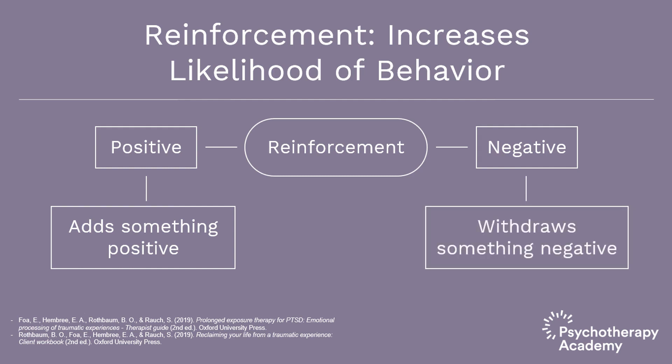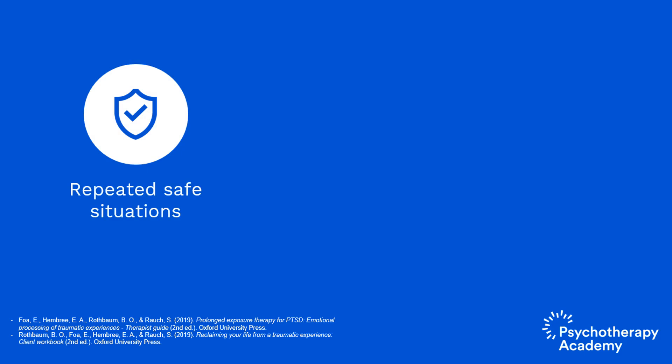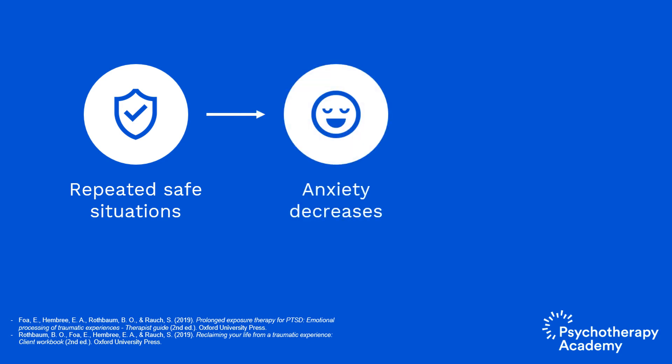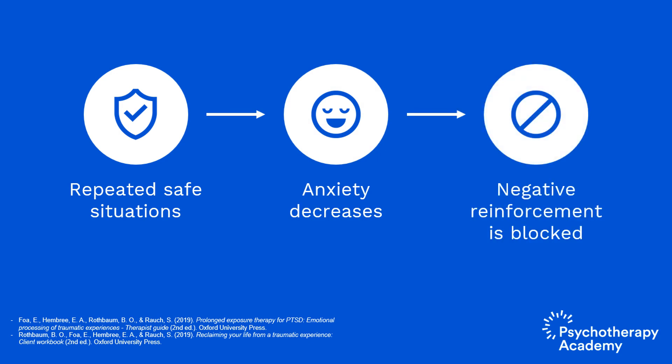Negative reinforcement increases the likelihood of a behavior by the withdrawal of something negative. If I am anxious and I escape, that escape is reinforced because my anxiety goes down. As part of the rationale, in vivo exposure blocks negative reinforcement by repeatedly putting yourself in realistically safe situations and staying in them long enough for your anxiety to decrease. The child example: if the child runs out of the room crying and feels better because he's away from the dog, that's negative reinforcement — we want to block that.